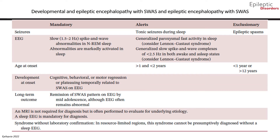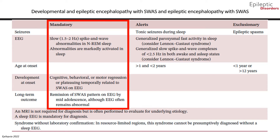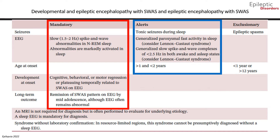Interictal EEG showing slow 1.5 to 2 Hz spike and wave abnormalities in non-REM sleep are mandatory for the diagnosis of developmental and epileptic encephalopathy with spike wave activation in sleep. In addition, EEG abnormalities are markedly activated in sleep. Other mandatory features needed for the diagnosis include cognitive, behavioral, or motor regression, or plateauing temporarily. Alerts that should suggest investigation of an alternate etiology include tonic seizures during sleep, EEG patterns showing generalized paroxysmal fast activity, or generalized slow spike and wave complexes less than 2.5 Hz, both of which could be seen in Lennox-Gastaut syndrome.